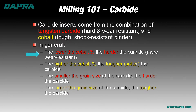Less cobalt binder and more carbide makes a harder grade, so conversely, more cobalt and less carbide makes a softer or tougher grade. Using a smaller grain size generally creates a harder, more dense grade of carbide, and using a larger grain size generally makes a tougher, less dense grade.